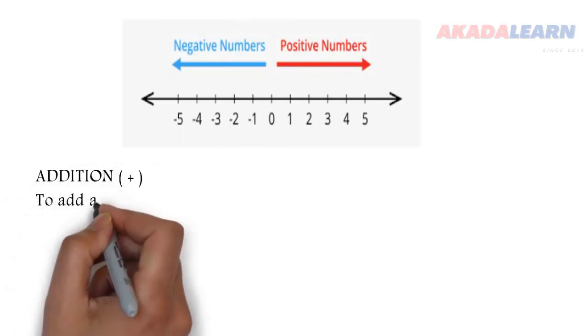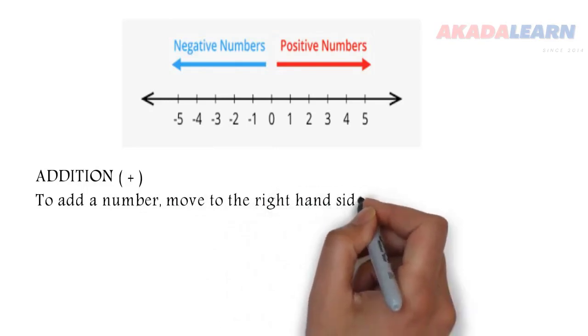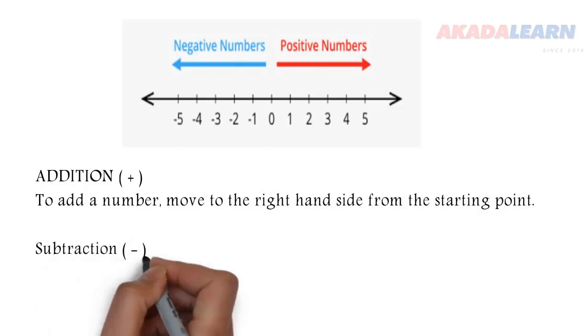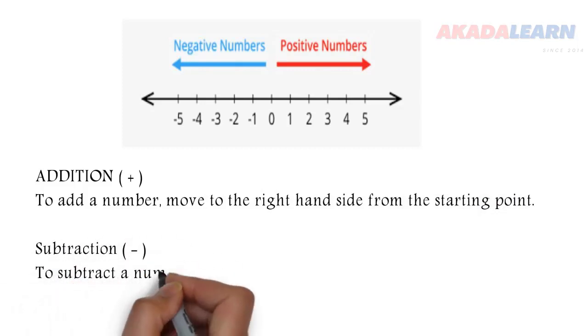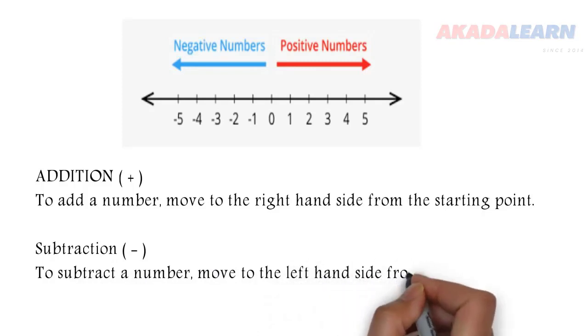Addition: what is the rule? To add a number, we move to the right hand side from the starting point. To subtract a number, we move to the left hand side from the starting point.